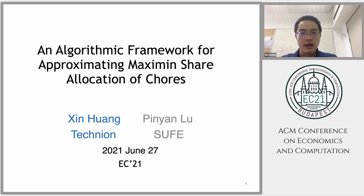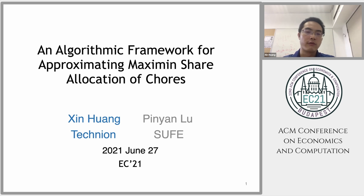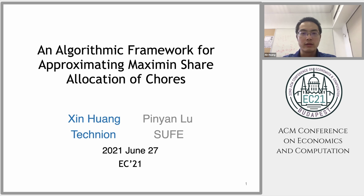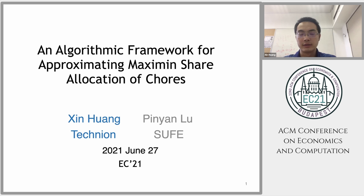In previous work, they show that this allocation may not exist and the best known approximation ratio is 4/3. With a framework similar to the first fit decreasing algorithm, we show the existence of an 11/9 approximation.